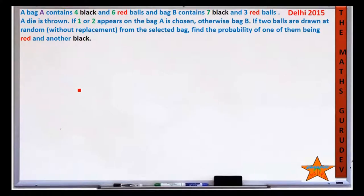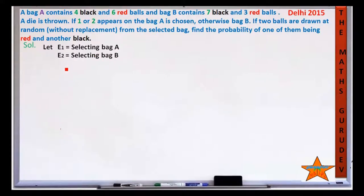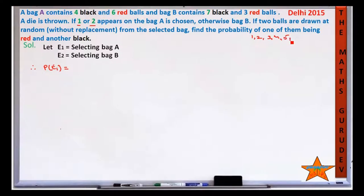We need to find the probability that one ball is red and one is black, when two balls are drawn without replacement. Let E1 be the event of selecting bag A and E2 be the event of selecting bag B. Since the die has 6 numbers and 1 or 2 favor bag A, P(E1) = 2/6 = 1/3.